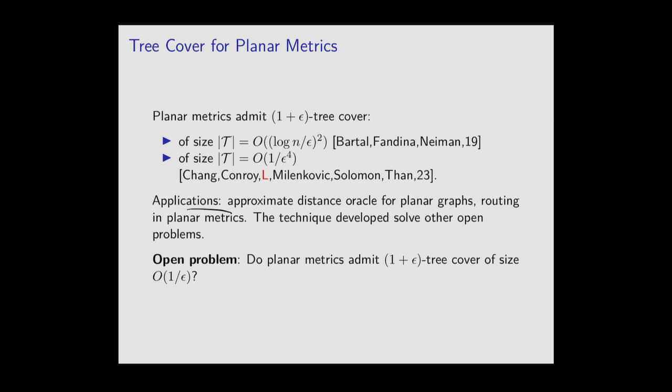Tree covers have a lot of applications. Once you have this structure, you get a good approximate distance oracle: you query the distance between two points by querying all trees and returning the minimum, which gives a good approximation. There are also applications in routing. The open problem remains: can we really match the Euclidean result? Every problem I discuss here comes with an accompanying open problem.